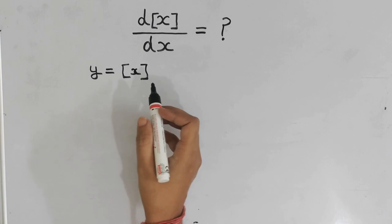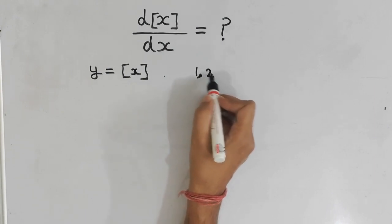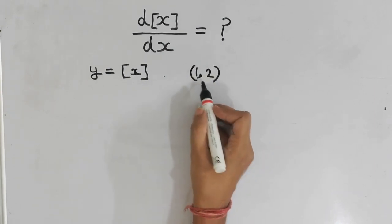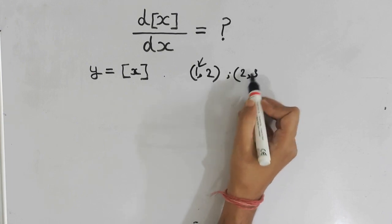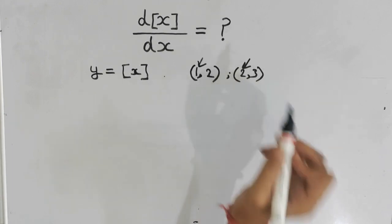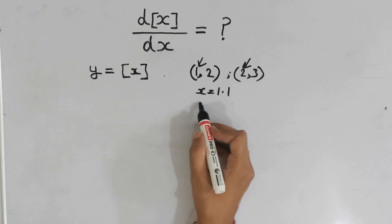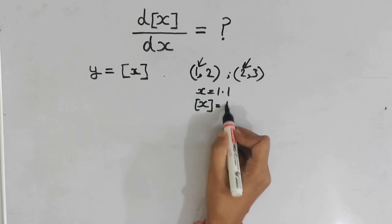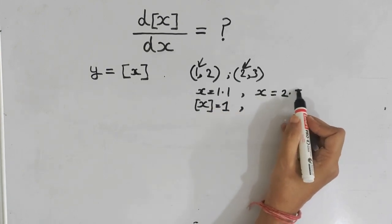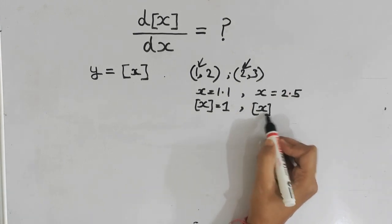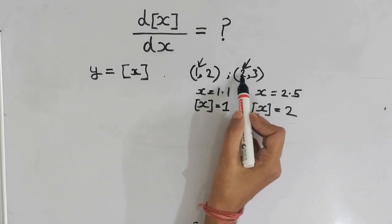What is the greatest integer function? Greatest integer function is something where if the value is between 1 and 2, it will always give the value 1. If the value is between 2 and 3, it will always give 2. For example, if x equals 1.1, then the greatest integer function of x equals 1. Similarly, if x equals 2.5, then the greatest integer function equals 2. It will always be the first integer in the bracket.